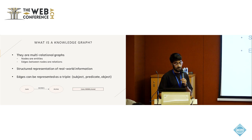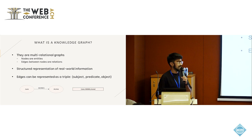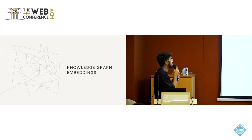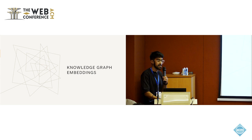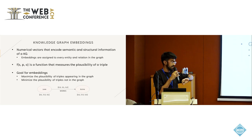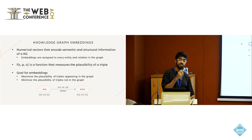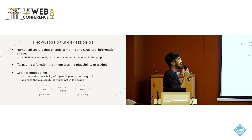Knowledge graphs contain a lot of information, and this information cannot be accessed directly — it needs to be distilled into some mathematical formulation. We use something called knowledge graph embeddings: numerical vectors that encode semantic and structural information in a knowledge graph. These embeddings are assigned to every single entity and relation in the knowledge graph, and are expected to capture the information contained in the graph.